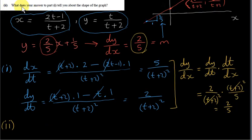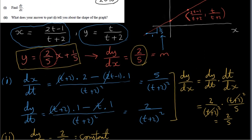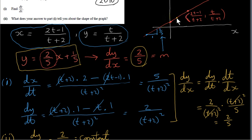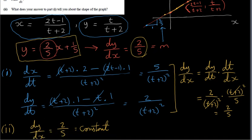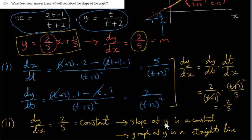In part two we want to explain what the answer to part one tells us about the shape of the graph. We found dy/dx = 2/5, which is a constant — it doesn't change. A constant slope means the graph must be a straight line. No matter which point we pick, the slope is 2/5. The tangent at every point coincides with the line, and dy/dx does not depend on x at all.